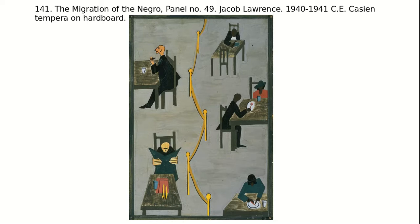They started migrating north from the south in the 1910s, seeking new job opportunities in the northern states, moving away from the Jim Crow South. In one panel we see a restaurant scene presumably up north of the Mason-Dixon Line, yet there's still a sectioned-off area — African-Americans and white Americans dining separately. He's showcasing the everyday life of African-Americans in the Jim Crow era.